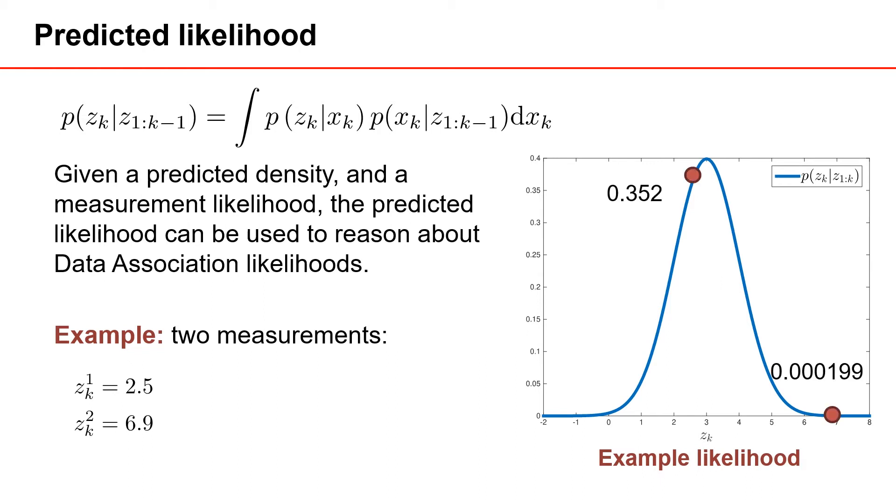In this case, we find that the measurement equal to 2.5 has a predicted likelihood of about 0.3, whereas the measurement equal to 6.9 has a likelihood of much, much less. In other words, the measurement valued 2.5 is the most likely measurement of these two. And if we had to make a decision which of these two measurements we should associate to the object, a good decision would be to take the most likely one.